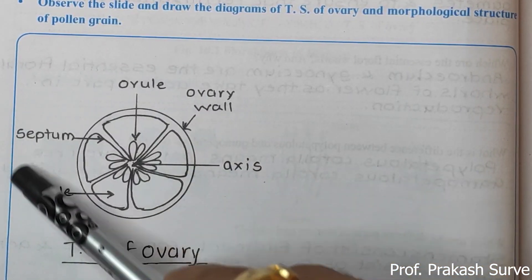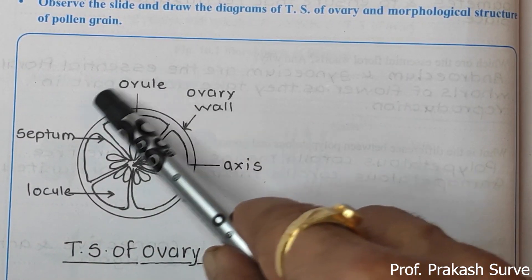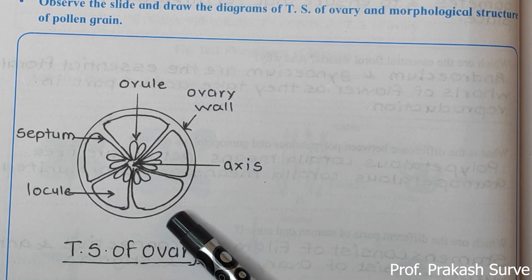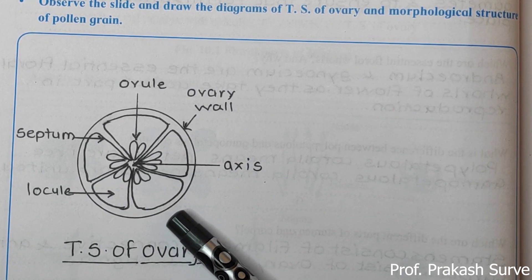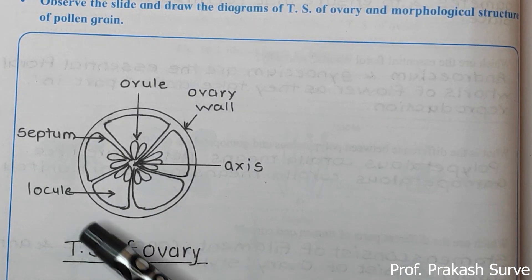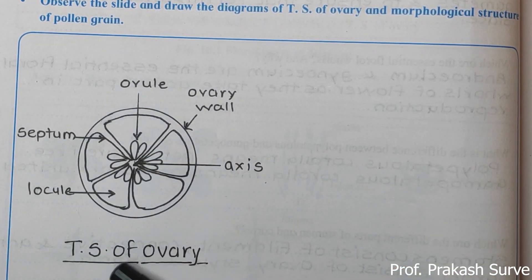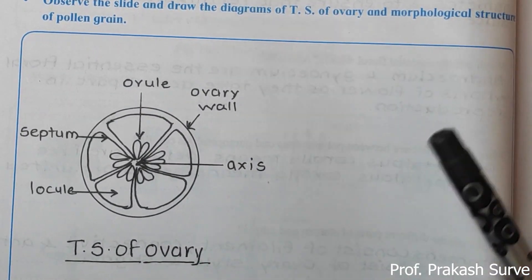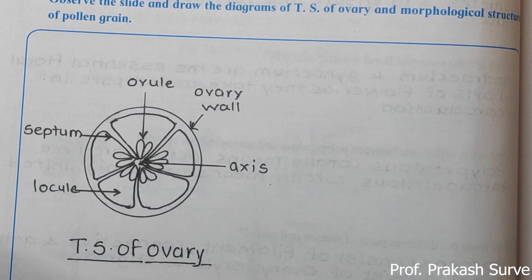For the TS of ovary diagram, you need to draw and label all parts. I have already shown the step-by-step method in my other video. Now we'll come to the viva voce.